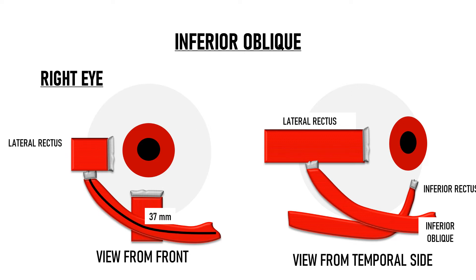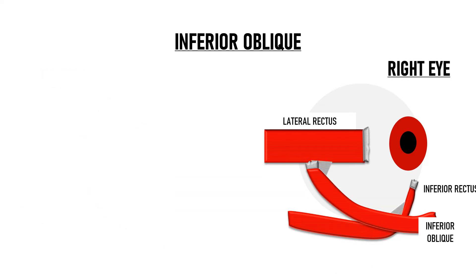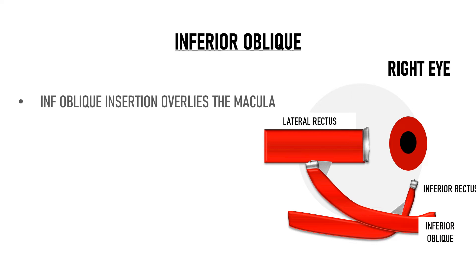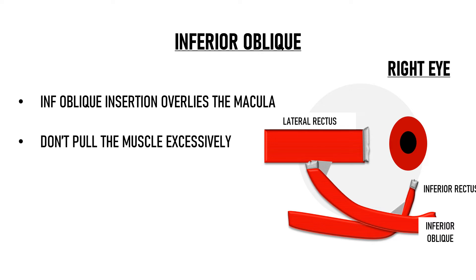Of all the extraocular muscles, the inferior oblique has the shortest tendon at only about 1 mm long. The border of the inferior oblique at its insertion is about 9.5 mm temporal to the inferior border of the lateral rectus insertion. Crucially, this insertion overlies the macula — the most important part of the eye for central vision — so during any surgical procedure involving the inferior oblique, one must not pull on the muscle excessively.